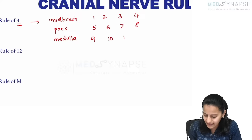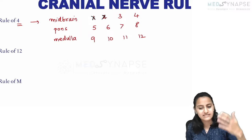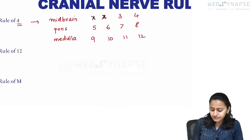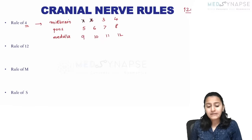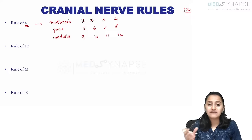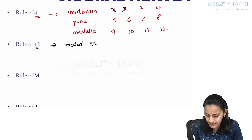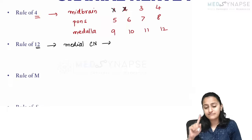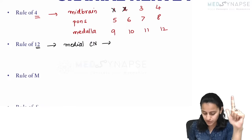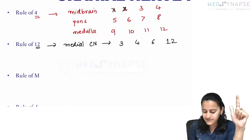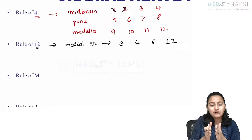Cranial nerves one and two are not from the midbrain per se — they come directly from the brain, the optic nerve and retina from the diencephalon. So from the midbrain you have cranial nerves three and four; five to eight is pons; nine to twelve is medulla. Now, which cranial nerves come from the medial part versus the lateral part? We use the rule of 12: cranial nerves whose table includes 12 are medial — that is, three, four, six, and twelve.